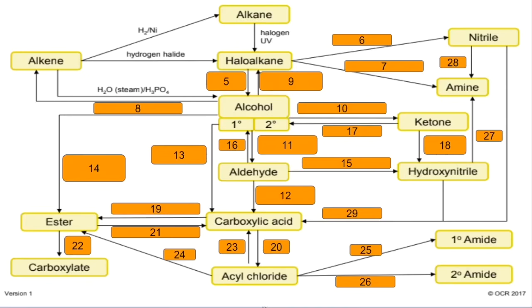Number five: haloalkane to alcohol — you react the haloalkane with aqueous sodium hydroxide and you'd normally warm that as well. Number six: haloalkane to nitrile — you need a source of cyanide ions, so that's normally KCN or NaCN, and it needs to be in ethanol.